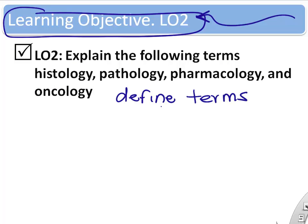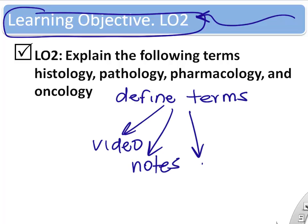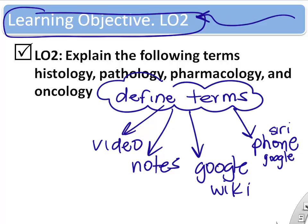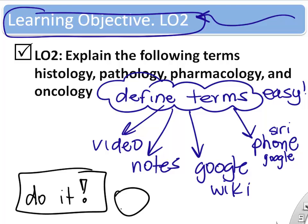The next learning objective is to define some common terms we'll hear throughout the course. This is practice using Google, the video, and notes to find and answer some questions. Learning objective two: try to define some of the terms shown here.